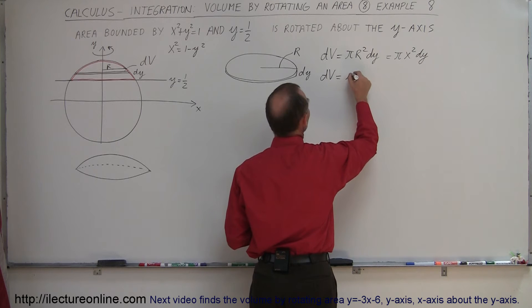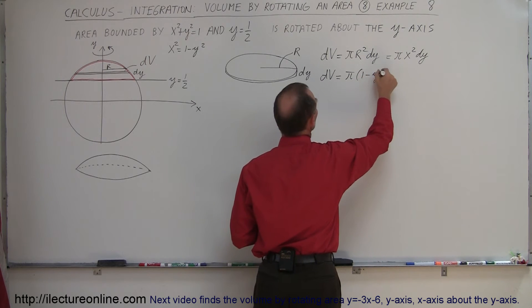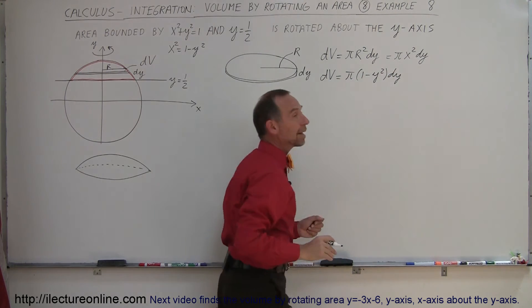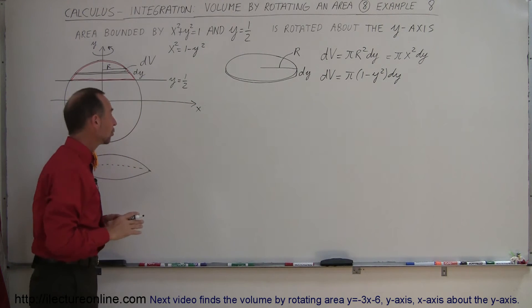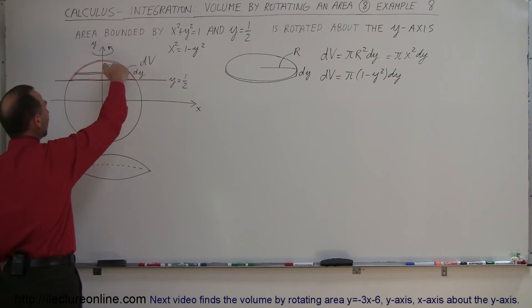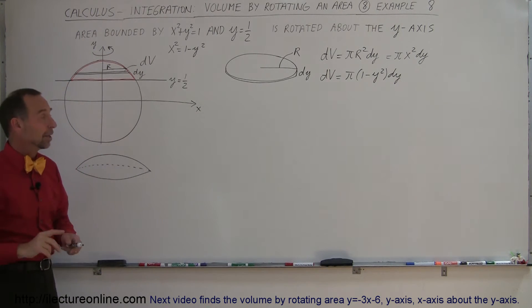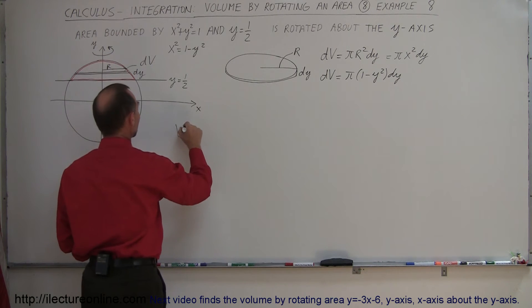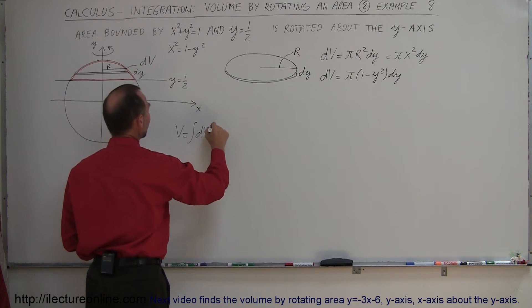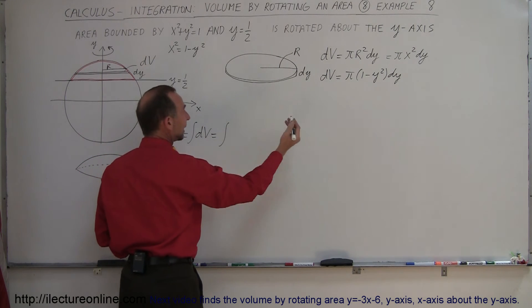So instead of writing X squared, we can write 1 minus Y squared, so our small little volume segment is equal to pi times 1 minus Y squared dy. Now I'm ready to integrate that. I can find the total volume because I'm going to slice this all up, add up all the slices, summing up all the slices like taking the integral.